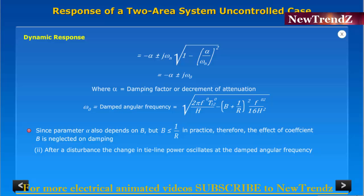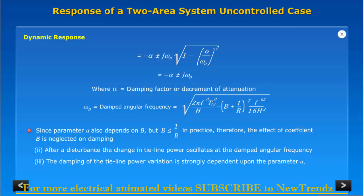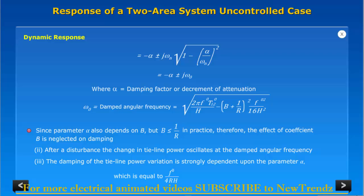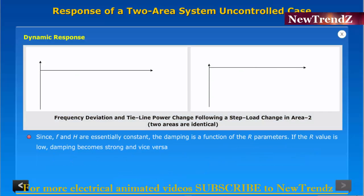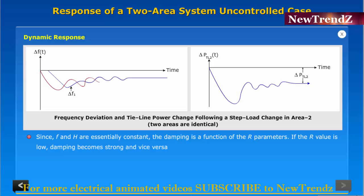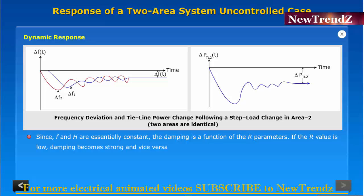After a disturbance, the change in tie line power oscillates at the damped angular frequency. Damping of the tie line power variation is strongly dependent upon the parameter alpha, which equals f0 divided by 4rH. Since f and H are essentially constant, the damping is a function of the r parameter. If the r value is low, damping becomes strong, and vice versa.